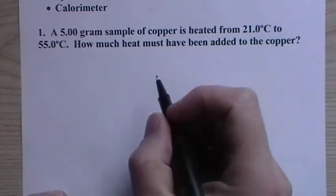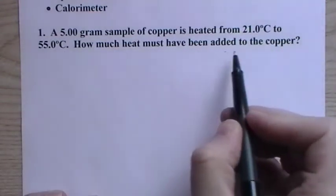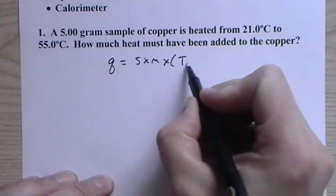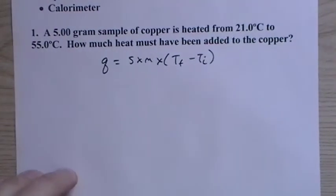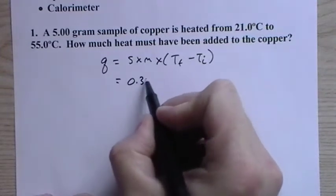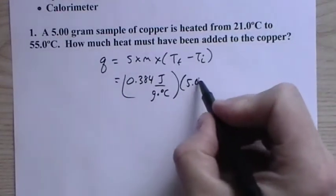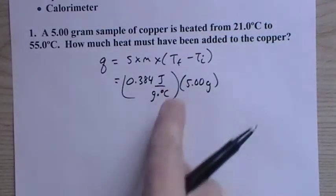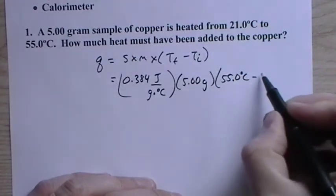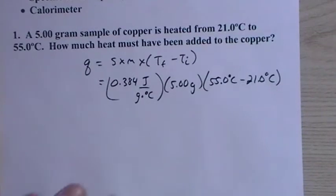So the first problem: a 5 gram sample of copper is heated from 21 degrees Celsius to 55 degrees Celsius. How much heat must have been added to the copper? Well, write out our expression. And since we're almost always going to have to expand out that delta T term, might as well do it now. The specific heat of copper is given in a table. You'd have to be given that on an exam.